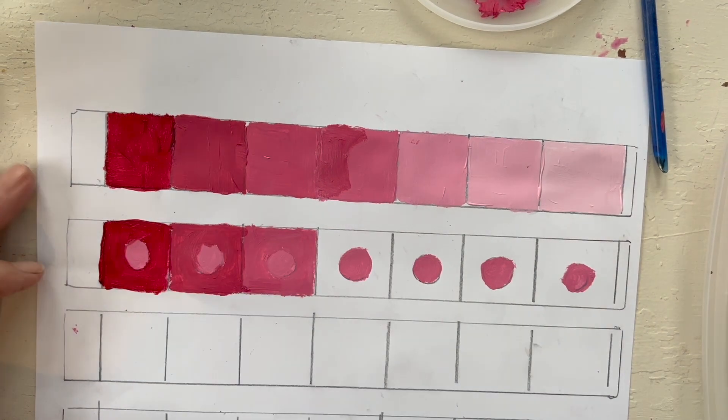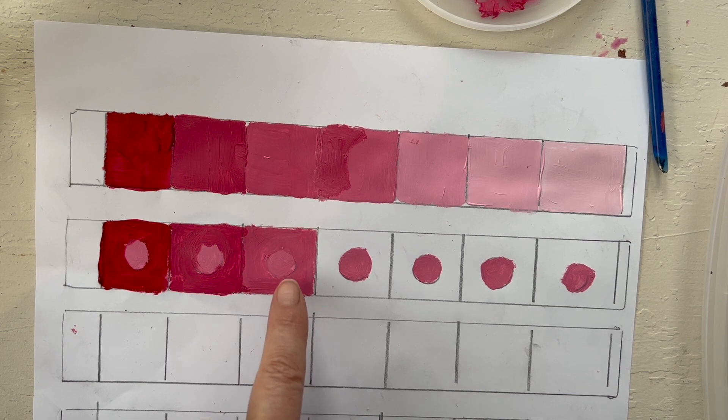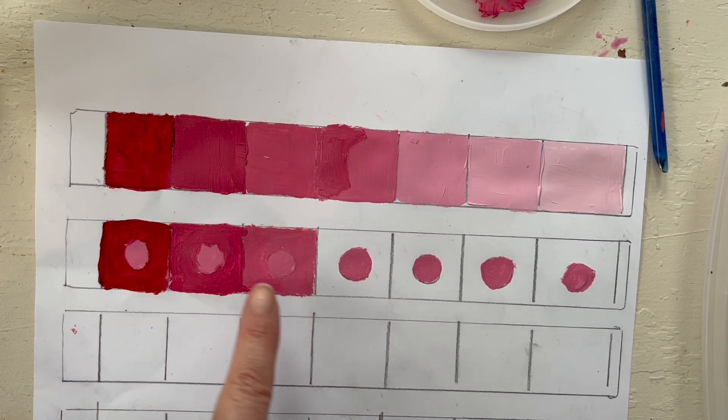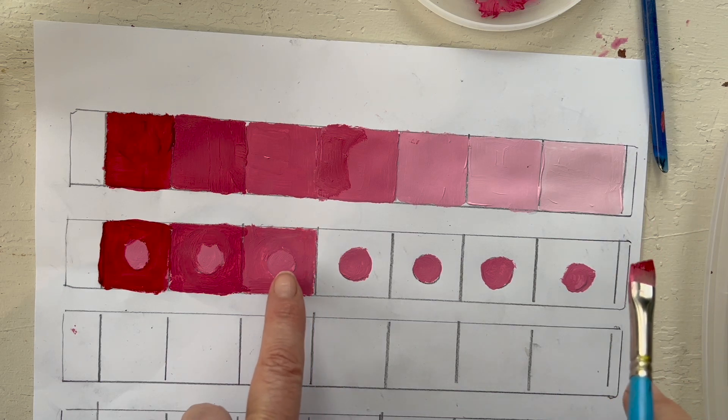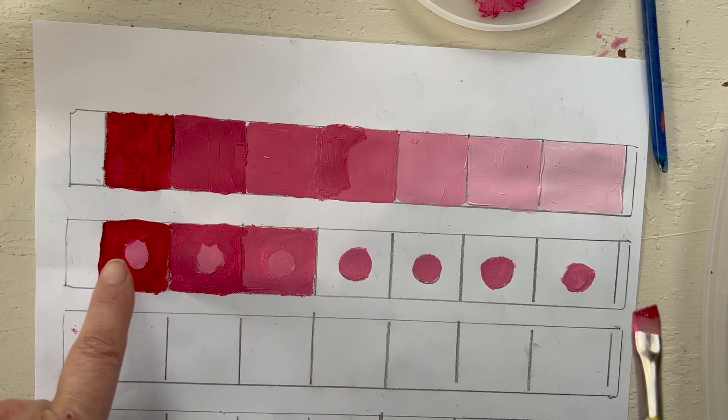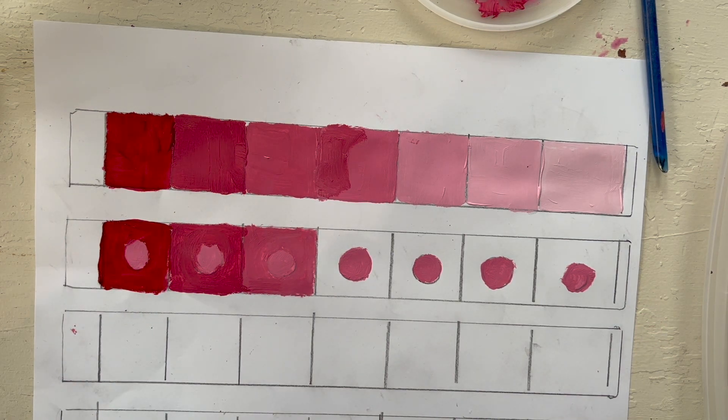Alright. Now, already you can see how the circle, this middle tone that I put in every single one of them. Notice how it looks darker here when it's surrounded with something lighter. And looks lighter where it's surrounded with something darker. And that's the simultaneous contrast that I want you to.